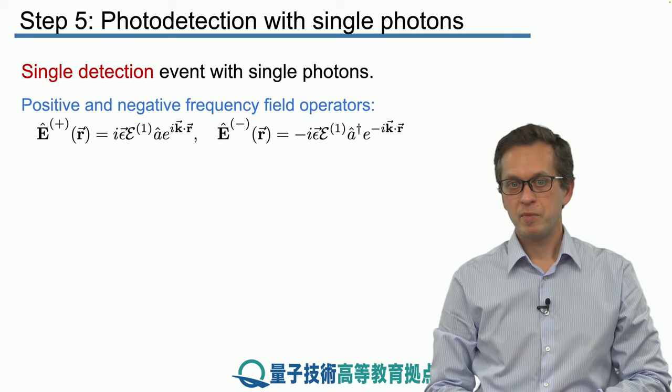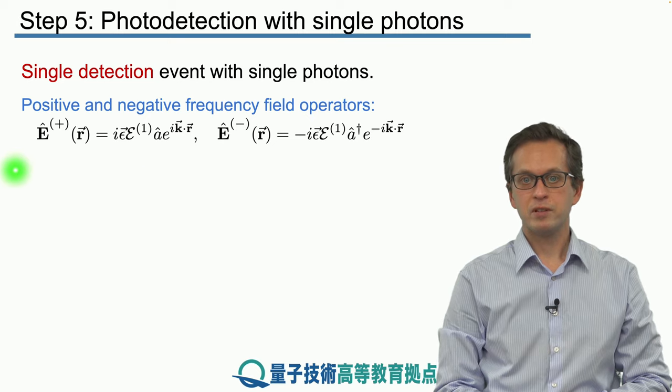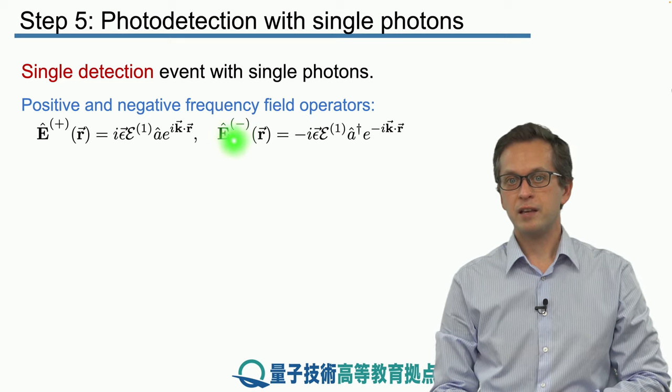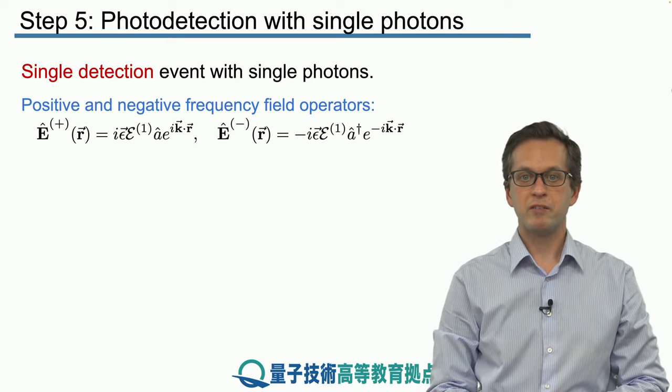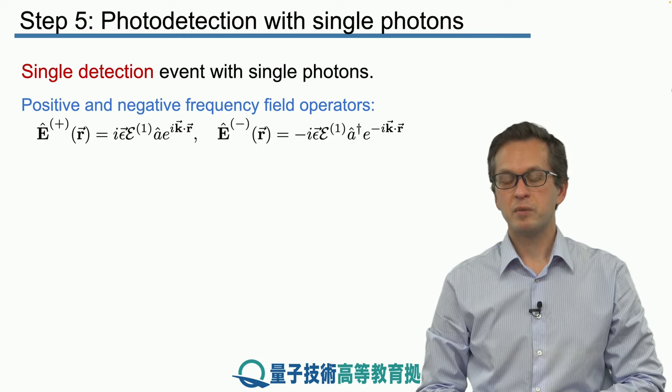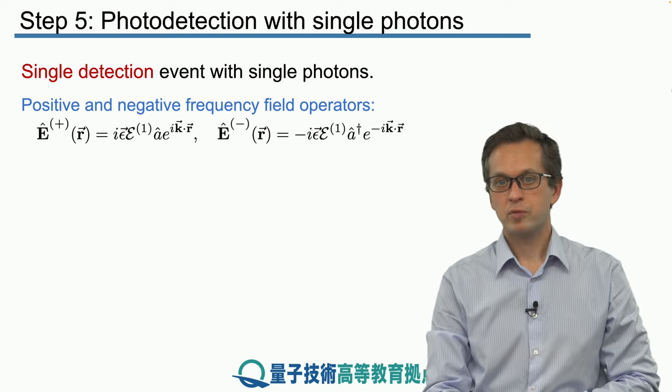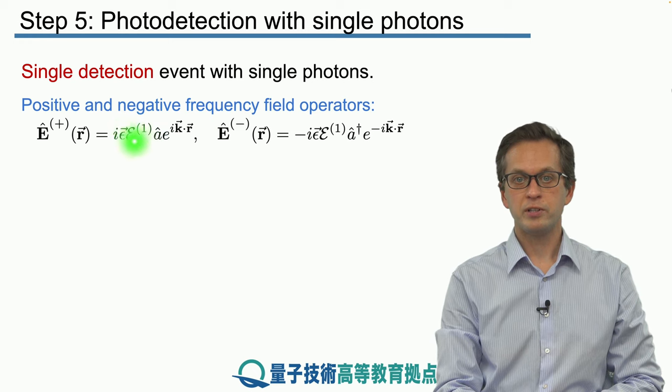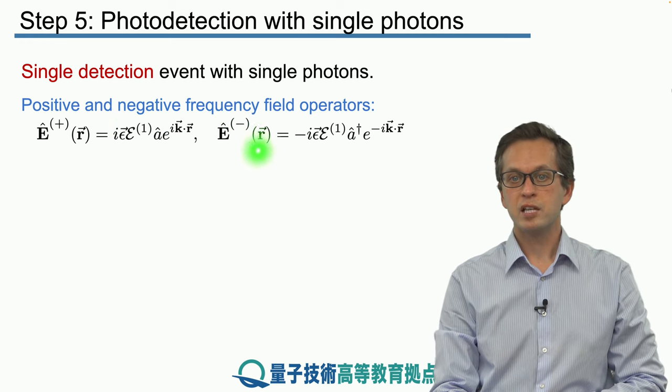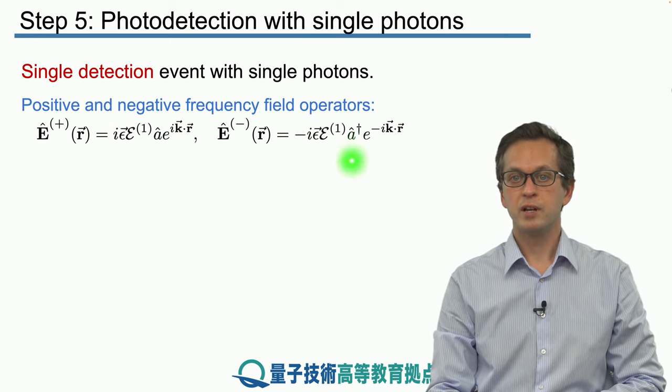So remember that the E+, the positive, and the E-, the negative frequency field operators are given by the following expressions. The main thing here to remember is that E-plus is proportional to the annihilation operator a, while the E-minus is proportional to the creation operator a dagger.